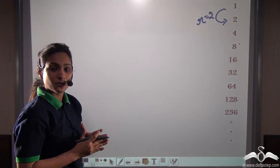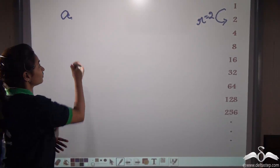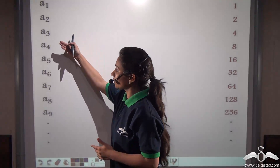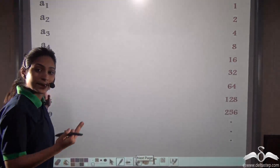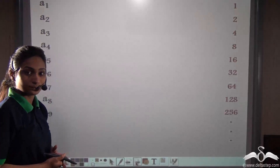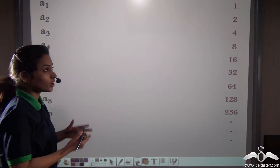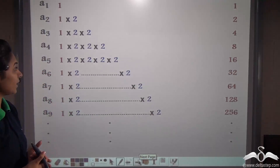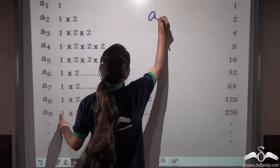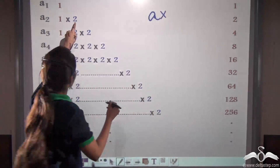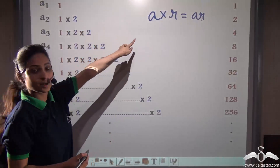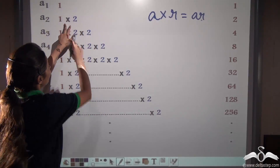The first term of a GP series we denote as A. The second term is A2, the third term A3, and so on: A1, A2, A3, A4, A5. The first term is simply A. For the second term, we are multiplying A by the common ratio R, so the second term is A into R.